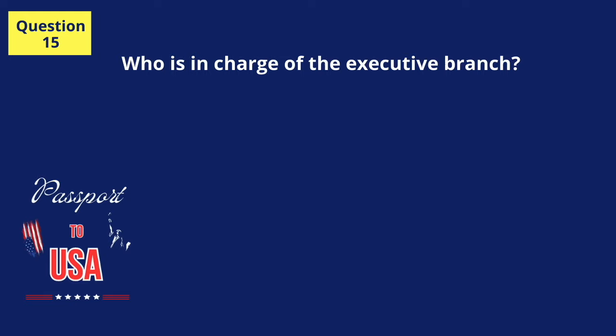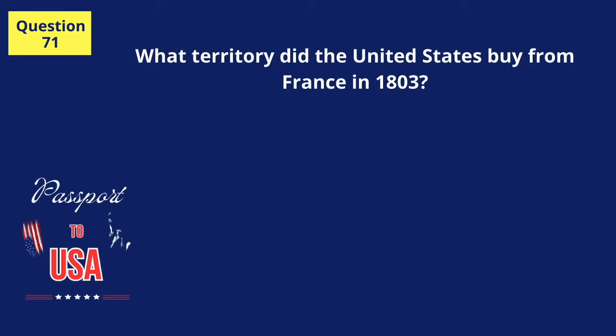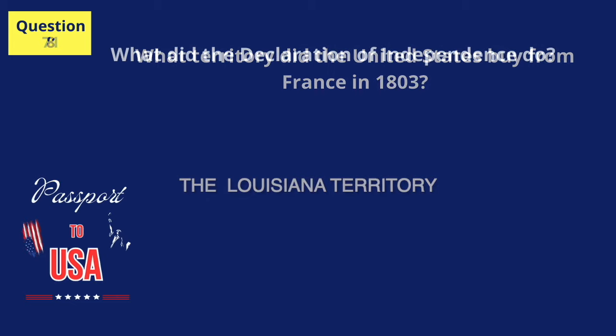Who is in charge of the executive branch? The President. What territory did the United States buy from France in 1803? The Louisiana Territory.